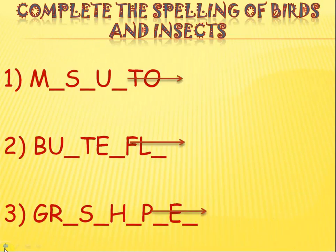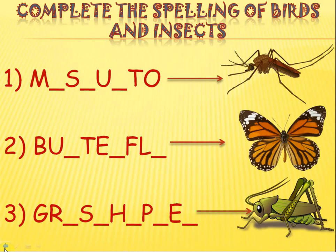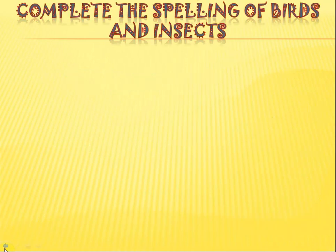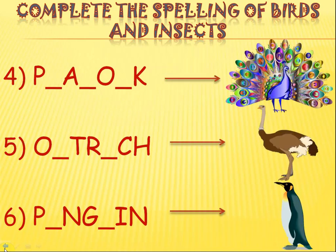Next, we will move to the question where we have to complete the spelling of the birds and insects. On the right side, an image of the insect is given. While matching with the image, the kid has to write and complete the name of the insect. The first insect is mosquito, so the kid will write O, Q, and I in the blank places to complete the name. In the next screen, there are three birds and the kid has to match the name of the bird and complete it by filling in the blank places.